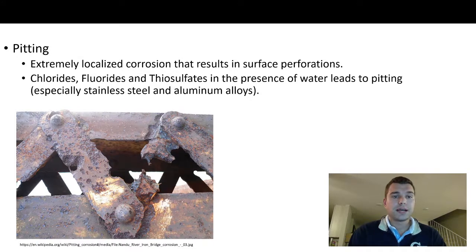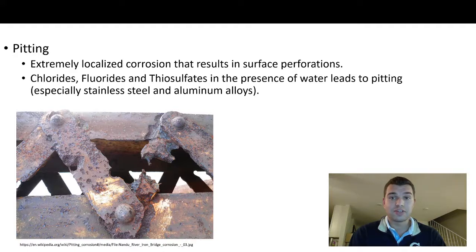Pitting is probably the easiest type of corrosion to notice when you're inspecting a vessel — it can be hard to miss if it's severe. It's extremely localized corrosion that results in surface perforations visible to the naked eye. Chlorides, fluorides, and thiosulfates in the presence of water can lead to pitting, especially in stainless steel and aluminum alloys.